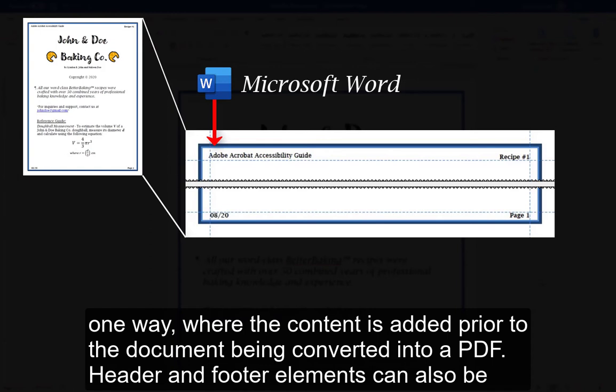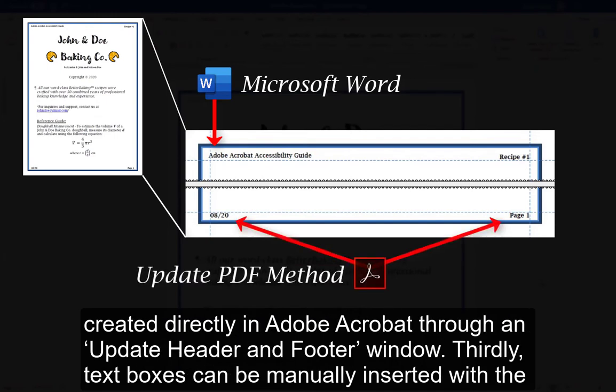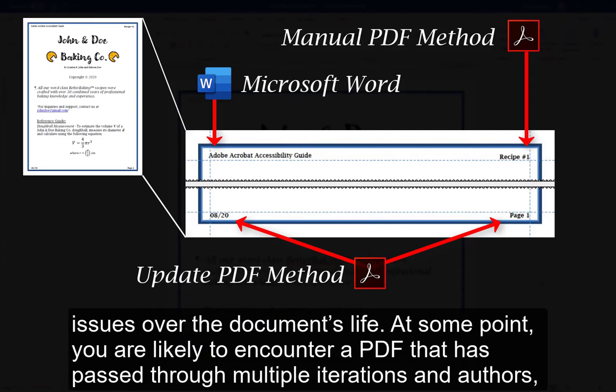Header and footer elements can also be created directly in Adobe Acrobat through an Update Header and Footer window. Thirdly, text boxes can be manually inserted with the Acrobat Edit PDF tool to create headers and footers. The combination of these methods in a single PDF can create confusing header/footer issues over the document's life.